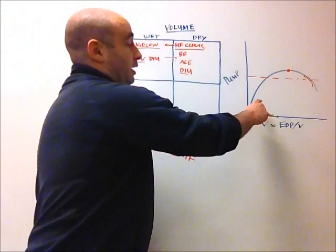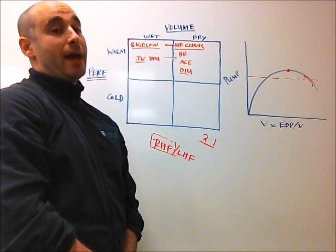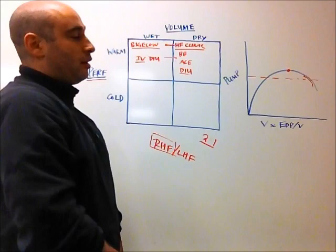So you begin to think to yourself, maybe is this patient on the dry side of their Starling curve? And as I've diuresed them, I've actually pulled them more and more dry, and they're starting to have issues with perfusion for that standpoint. Now that's a reasonable thought, and oftentimes you do try small fluid boluses in these people to try to bring them back up their Starling curve.